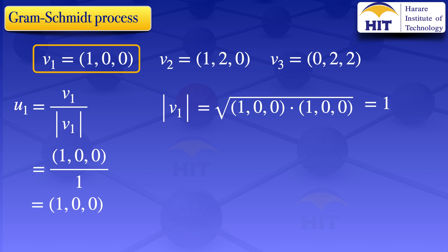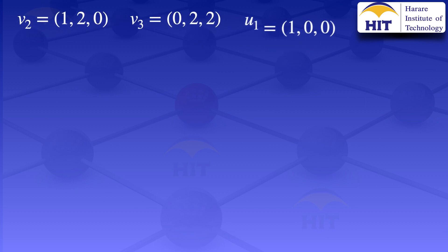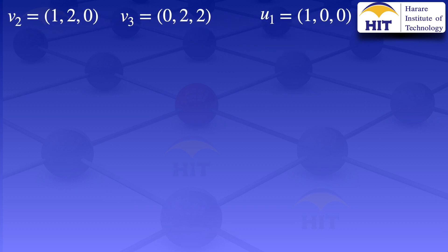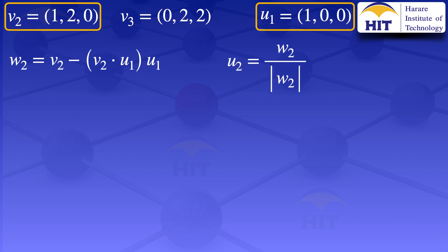We now have U1. We need to use it when calculating U2. To find U2, we first have to evaluate W2. W2 equals V2 minus the inner product of V2 and U1, multiplied by U1. U2 will then be given by W2 divided by the norm of W2.